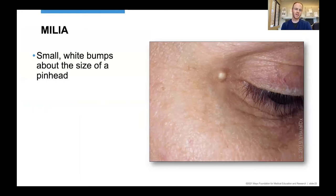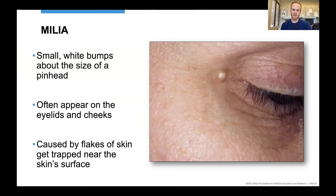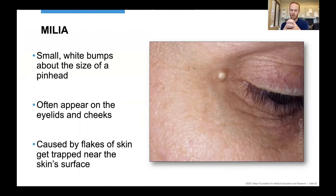Milia are also very common — small white bumps about the size of a pinhead, often on the eyelids or cheeks. These are basically small, tiny cysts under the skin, caused by flakes of skin that get trapped underneath the surface. Instead of sloughing off like they normally would, they fill up in a little ball underneath the skin, forming these tiny cysts. These can be removed — usually we just nick them and pop them out, which is pretty simple and straightforward.